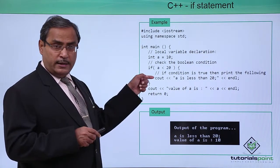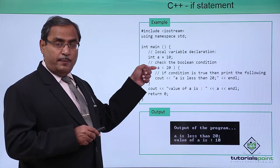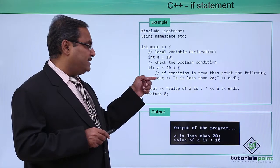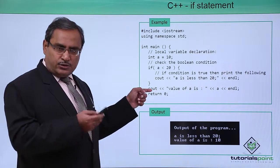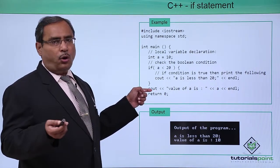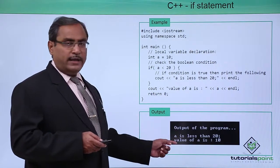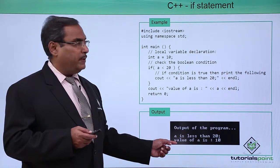It is getting printed from here because the condition was true because 10 is less than 20. This got executed and as it is outside of the if construct, it will always get executed. The value of a is 10, it has got executed accordingly and outputs have been obtained.